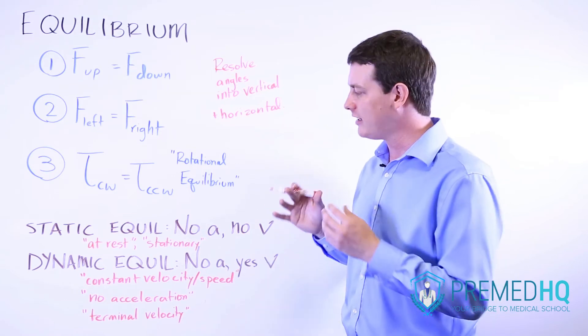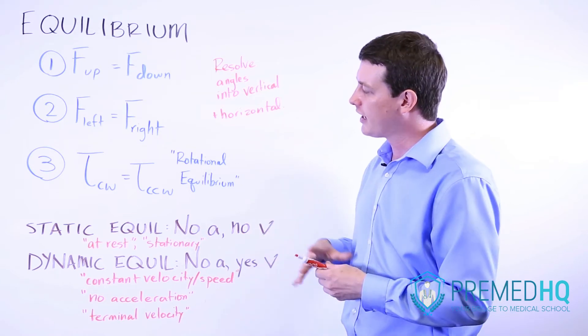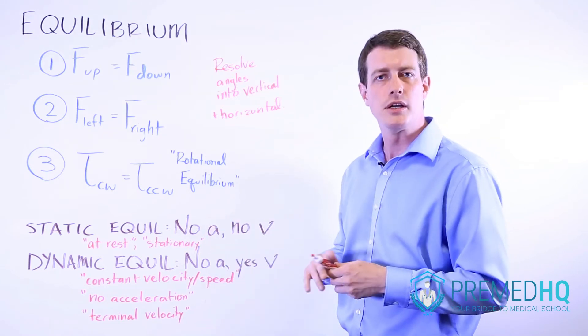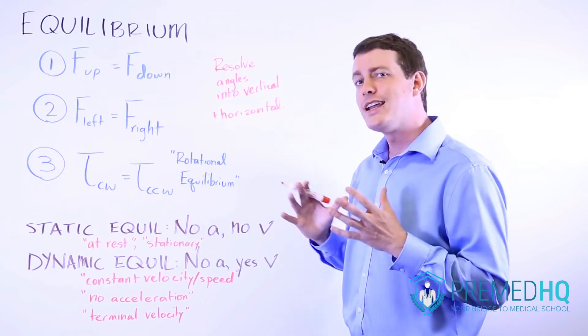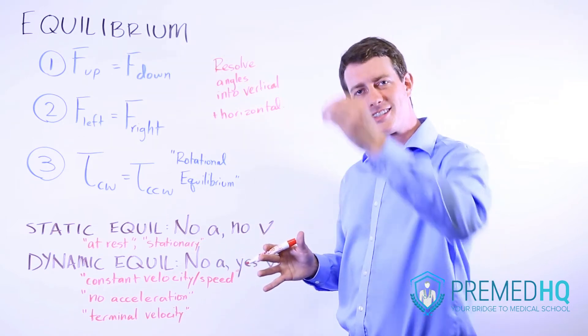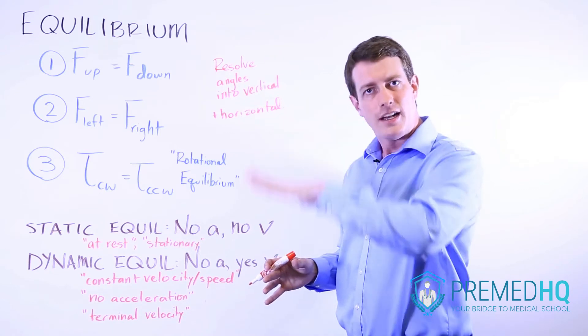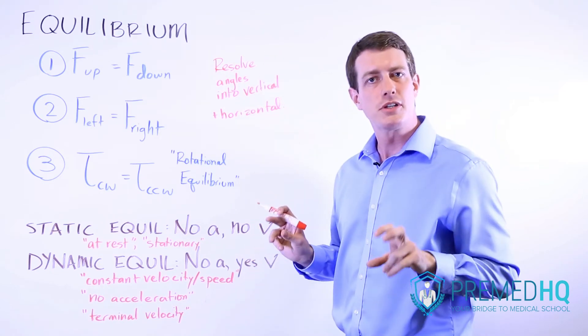And other keywords that can clue you into that will be no acceleration or terminal velocity. These are all terms that can clue you into the fact that you're working with a dynamic equilibrium type of problem. Dynamic equilibrium is something you see with a skydiver who is falling and reaches what they call a terminal velocity.